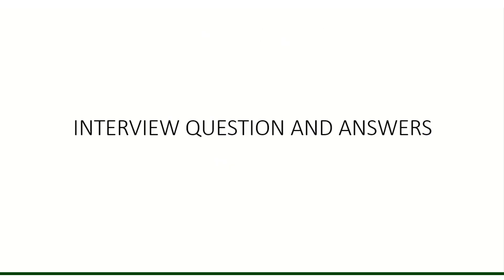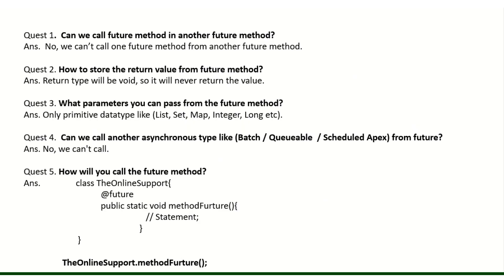Now some interview questions. Can we call a future method from another future method? No, we can never call a future method from another future method. How do you store the return value from a future method? The return type must be void — you cannot use any return type other than void because it runs in the background and Salesforce does not know when the return will come, so this is completely restricted.